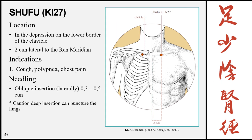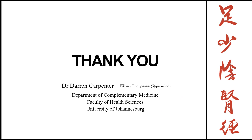Shufu, Kidney 27, is the final point, located in the depression on the lower border of the clavicle, 2 cun lateral to the midline or Ren meridian. Indications: cough, polypnea, and chest pain. Needling: oblique insertion laterally 0.3 to 0.5 cun. Caution against deep perpendicular insertion as this can still puncture the lungs. That is the end of the kidney meridian. The next meridian to be covered is the Pericardium Meridian of the Hand Jueyin.